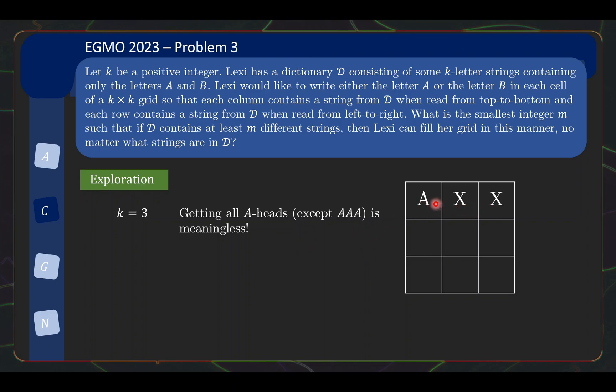Now if your dictionary has only all the A-heads except AAA, then you are also stuck, because if you have all the A-heads then one of these must have at least a B, but because you don't have a B-head you will not be able to fill that column. This is similar to the k equals 2 case where you have AB but then you don't have BA. So it turns out that the size of 3 for the dictionary is not enough, because you can get all the A-heads except AAA.